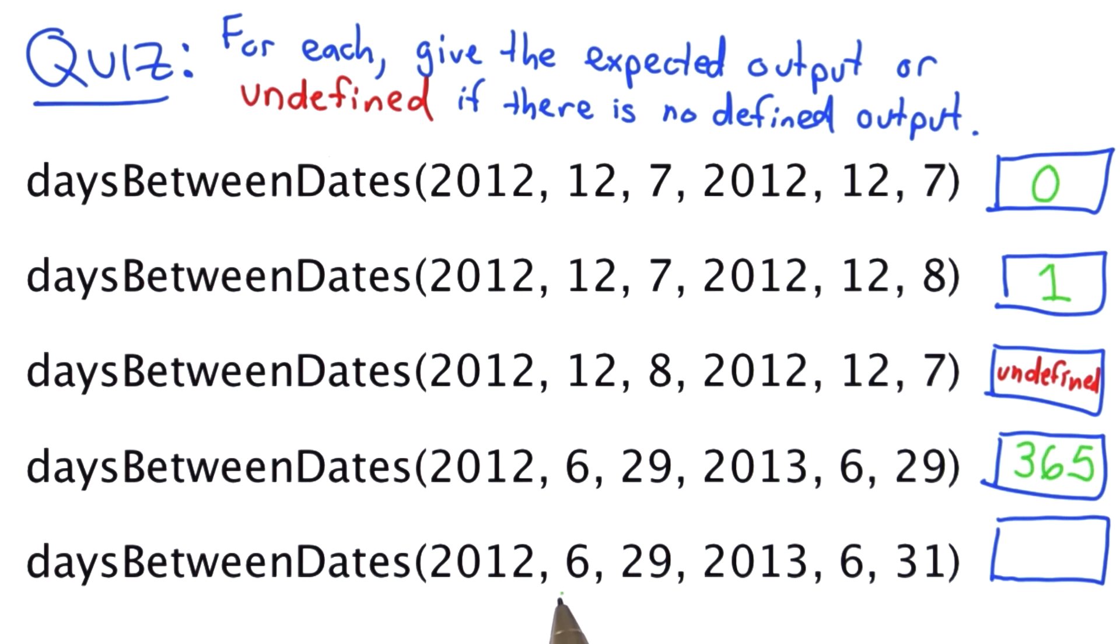For the final one, we're going from June 29, 2012 to June 31, 2013. If you know your calendar well, you know that there's actually no June 31.